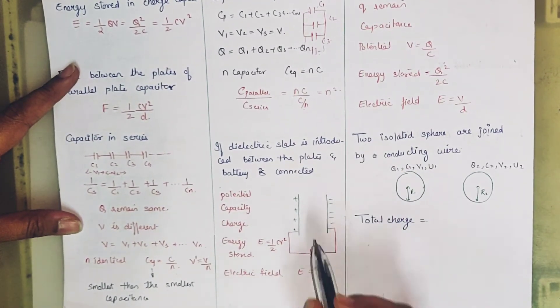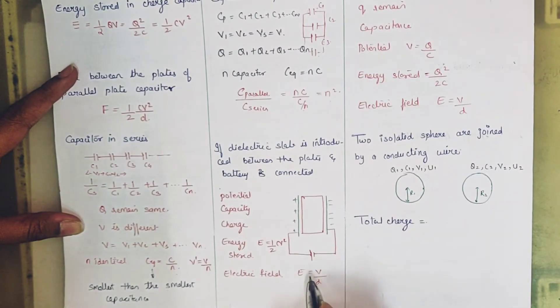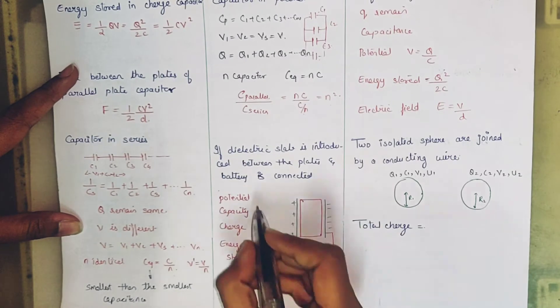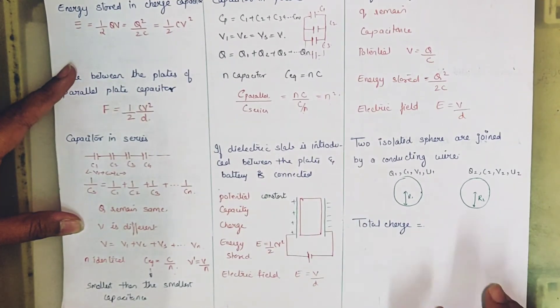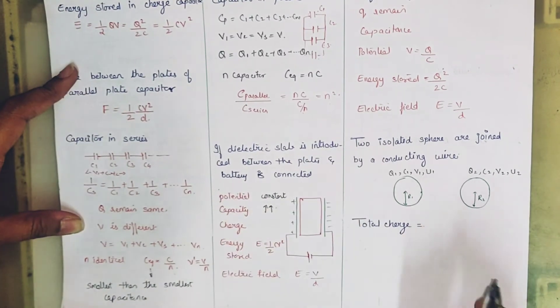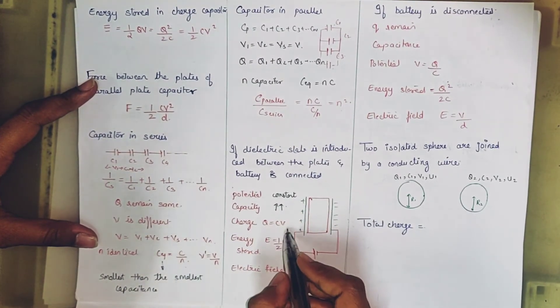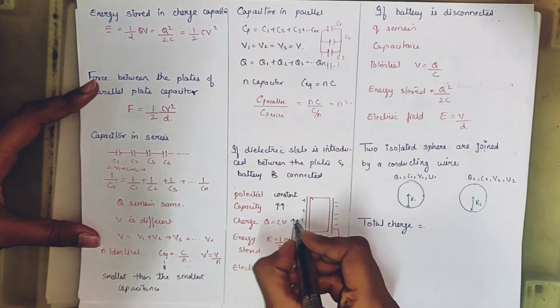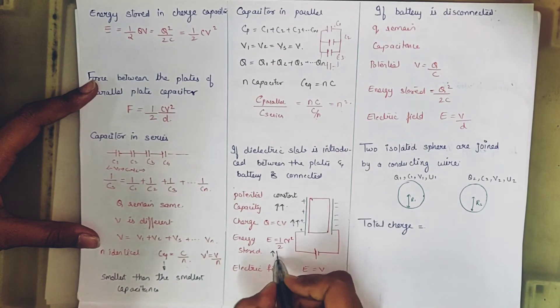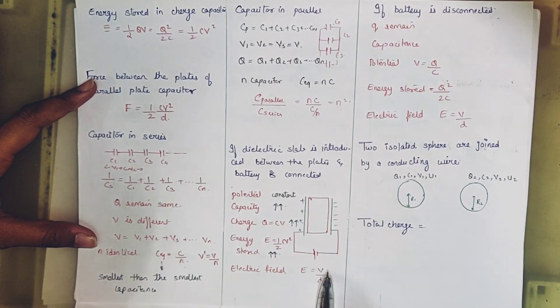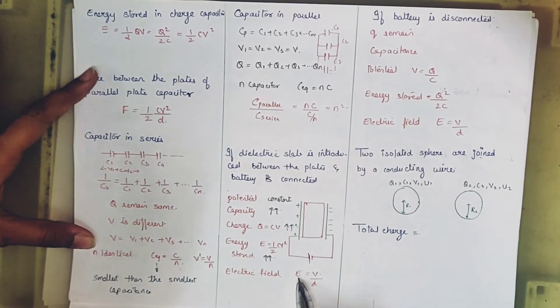Now let's see here. Here is a capacitor. In this case, we have put a dielectric slab on it and it is connected with the battery. So what will happen here? If it is connected with the battery, the potential of the battery will remain constant. Q will also increase. Next is electric field. Electric field formula is V by D. Now V is the potential and D is the distance between the plates. If both are constant here, then E, that is electric field, will remain constant.